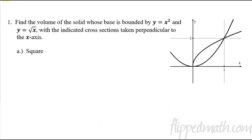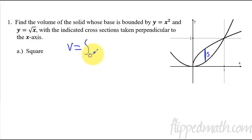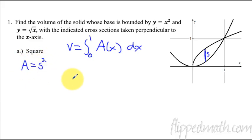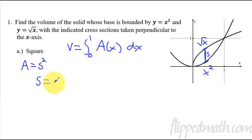Now we can work on the first problem. The base is the shaded region, and one of these cross-sections is equivalent to a square where the side of the square is coming up — so this distance is S. The volume will be the integral from 0 to 1 of A(x) with respect to x. The formula for a square is S squared, so I need to know S. S is this distance, which means you take the top function and subtract the bottom function: square root of x minus x squared. That is S.